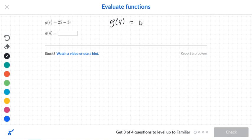So we're going to say g of 4 is equal to 25 minus 3 times, no longer r, we'll make it 3 times 4. We'll go ahead and do the multiplication, so that's minus 12. From here, we'll get an answer of 25 minus 12 is 13. So g of 4 is equal to 13.